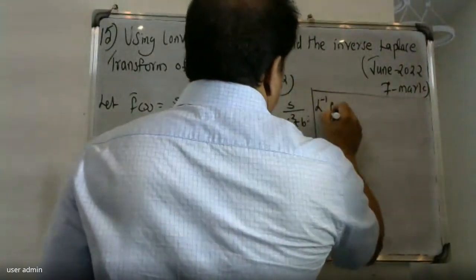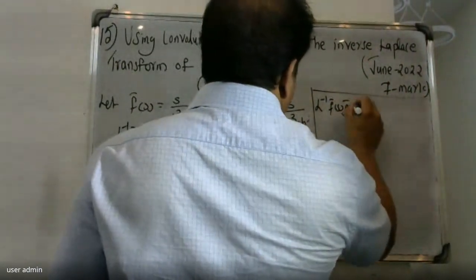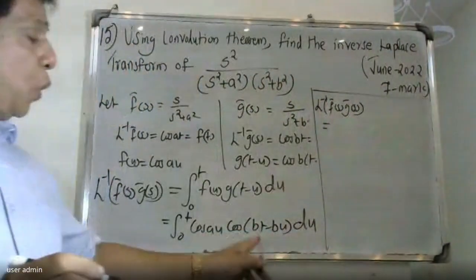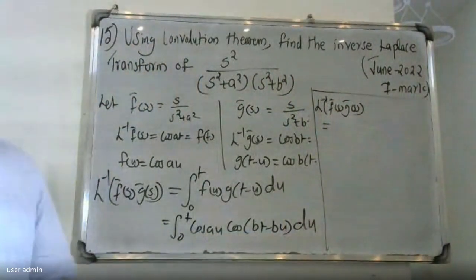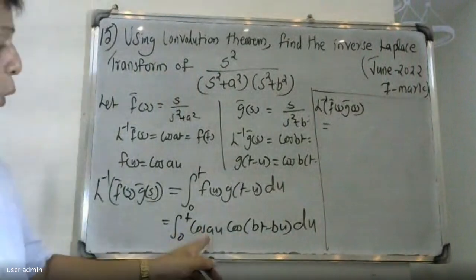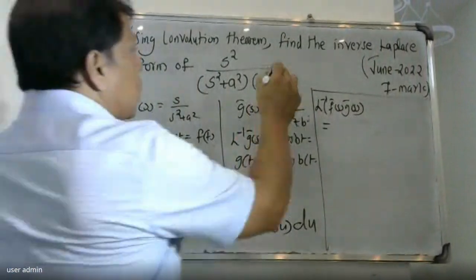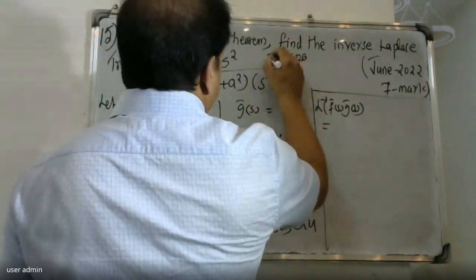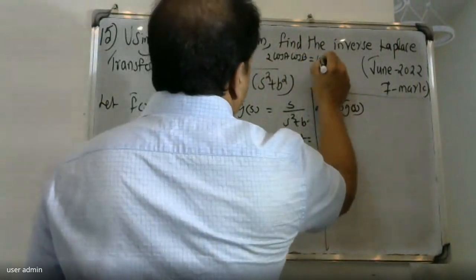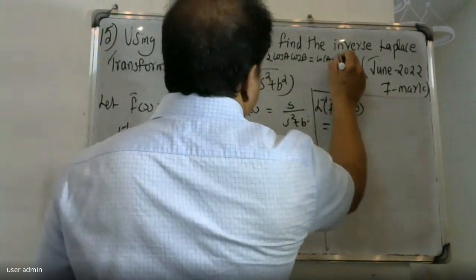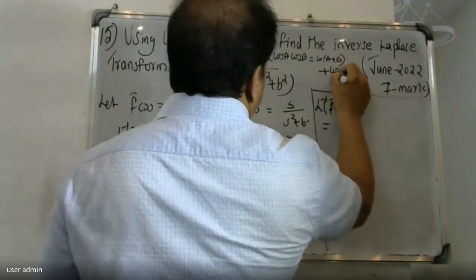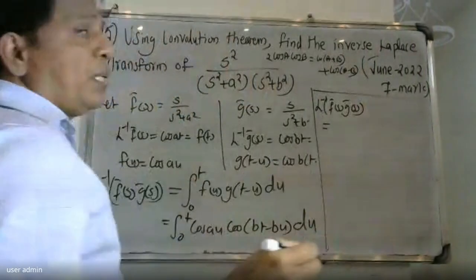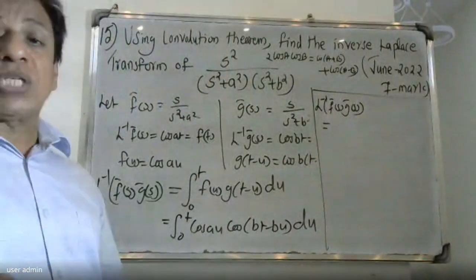Applying the identity 2·cos(A)·cos(B) = cos(A + B) + cos(A − B), we write cos(au) · cos(bt − bu) = (1/2)[cos(au + bt − bu) + cos(au − bt + bu)], which equals (1/2)[cos((a − b)u + bt) + cos((a + b)u − bt)].